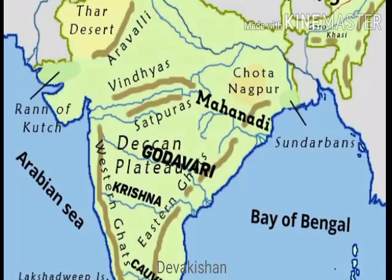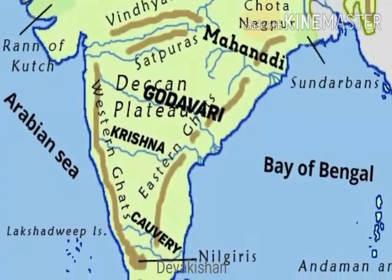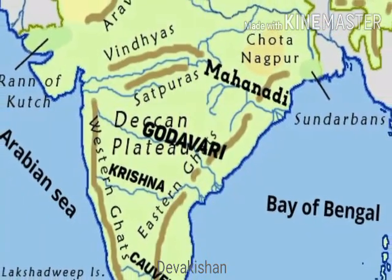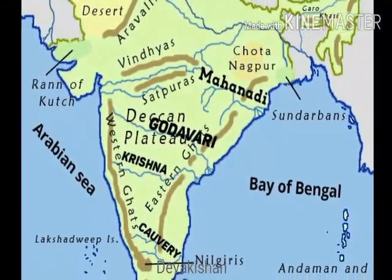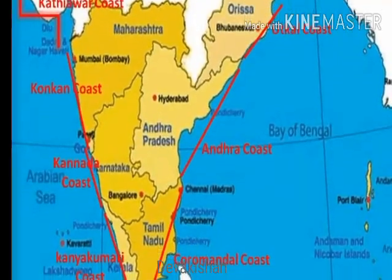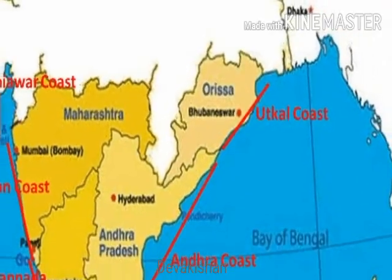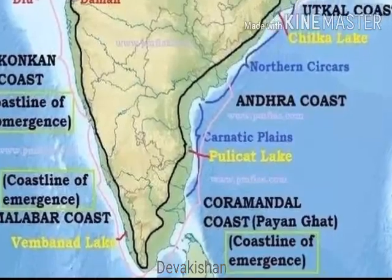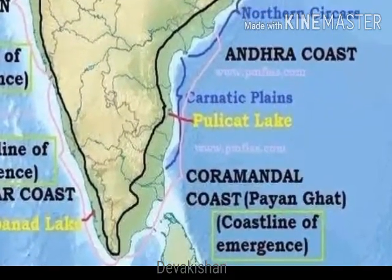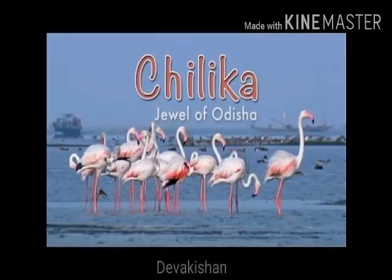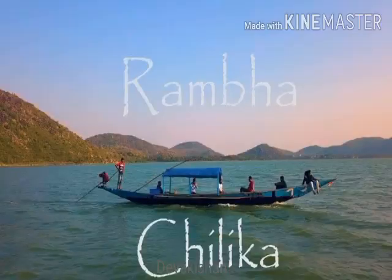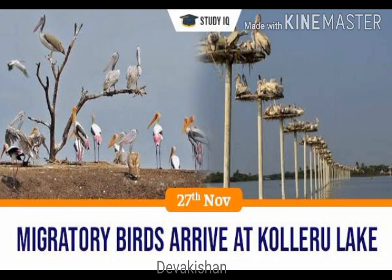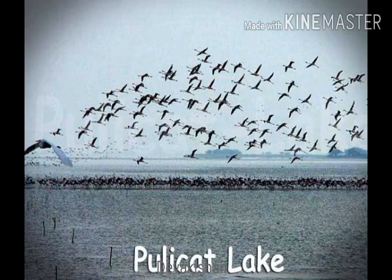The eastern coastal plains are wide and have a large surface structure. They stretch from the Mahanadi in Odisha to the Kaveri Delta in Tamil Nadu, and are formed by the rivers Mahanadi, Godavari, Krishna, and Kaveri, making them very fertile. These coastal plains are divided into three parts: 1. Utkal Coast in Odisha; 2. Sarkar Coast in Andhra Pradesh; 3. Coromandel Coast in Tamil Nadu. The coastal zone also enables rich fishing resources. Three lakes are found in the eastern coastal plains: Chilika Lake in Odisha (a saltwater lake), Kolleru Lake in Andhra Pradesh (a freshwater lake), and Pulicat Lake in Andhra Pradesh (a saltwater lake).